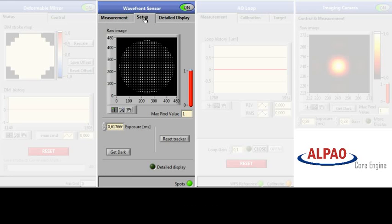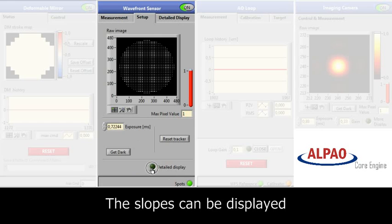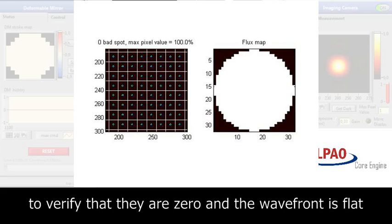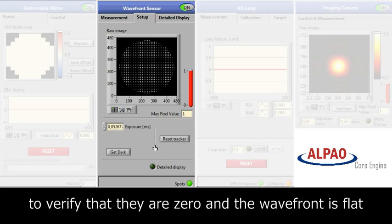Here we can see a detailed display of the wavefront where we can verify that the wavefront is flat by either looking at the spots or verifying that our slope matrix is zero.